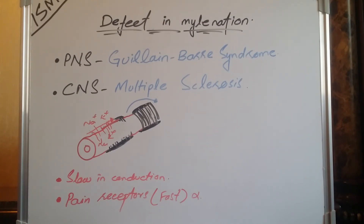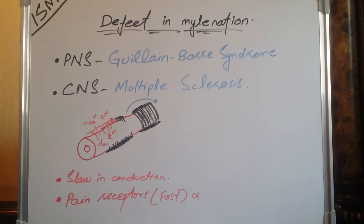Myelination is very important and necessary for the proper conduction of impulses to and from the central nervous system. If the defect is in the peripheral nervous system, it is called Guillain-Barré syndrome, and if it is in the central nervous system, it is called multiple sclerosis. I hope you understand it.